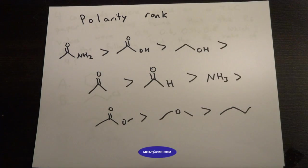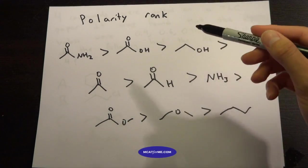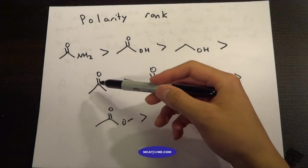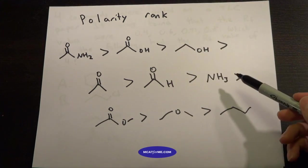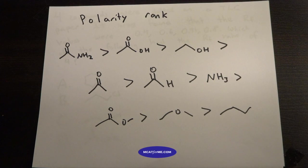So the first one is going to be an amide, then a carboxylic acid, an alcohol, a ketone, an aldehyde, an amine, an ester, an ether, and just a normal straight alkane.